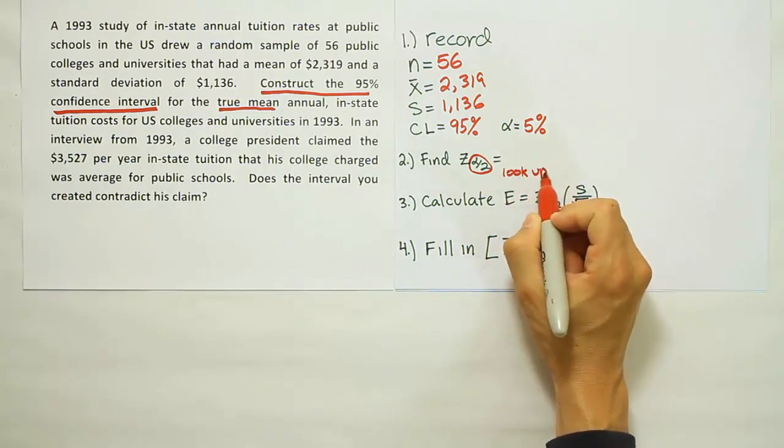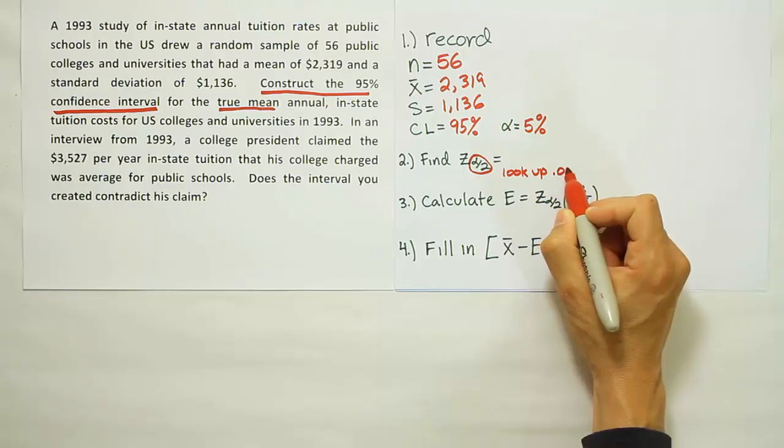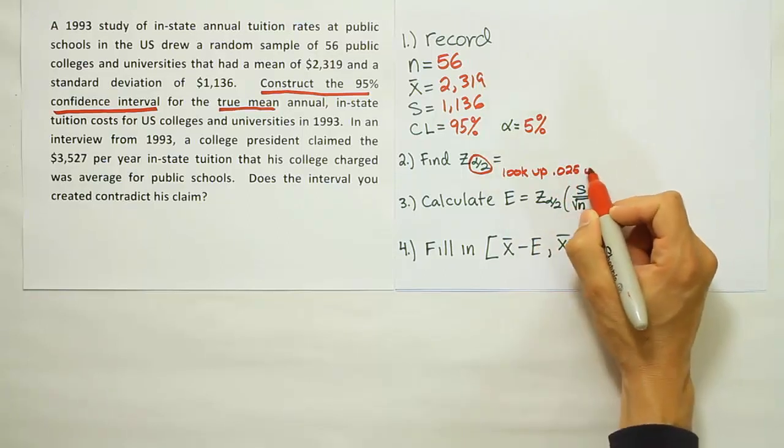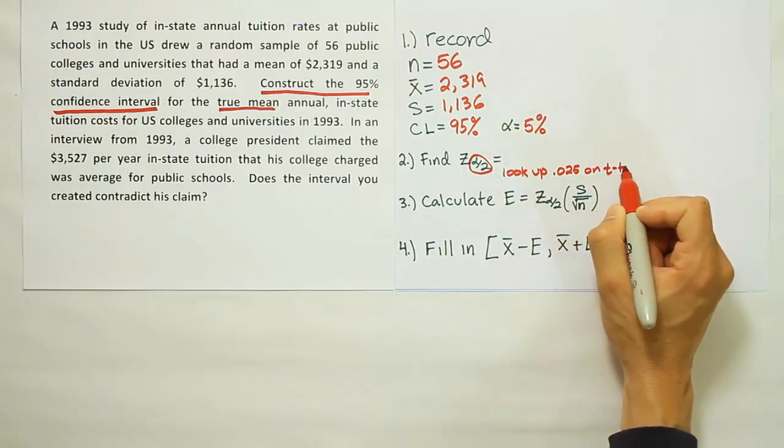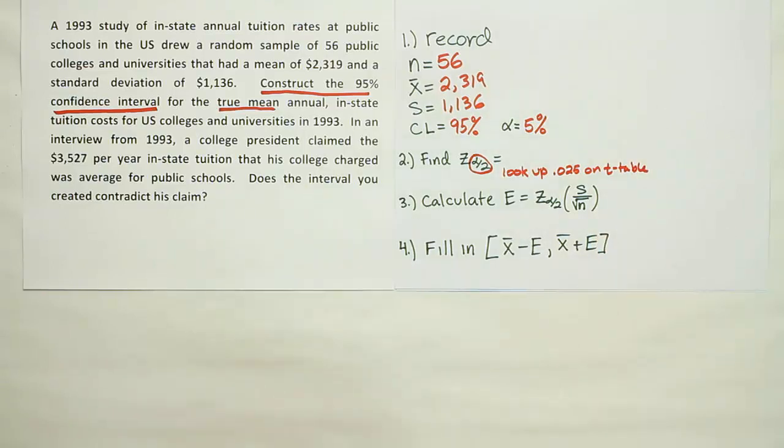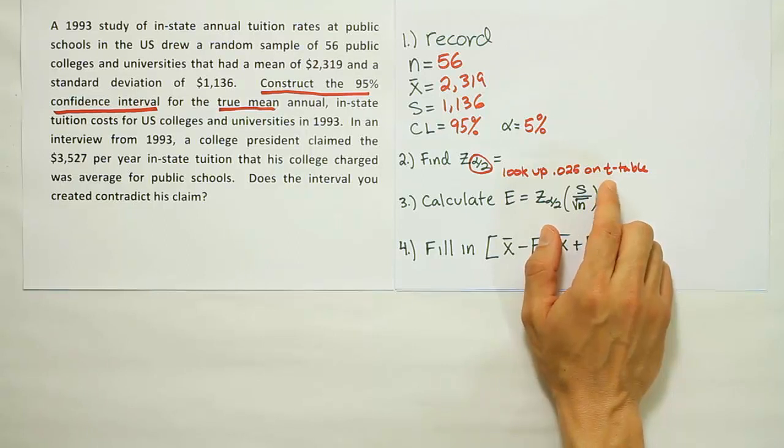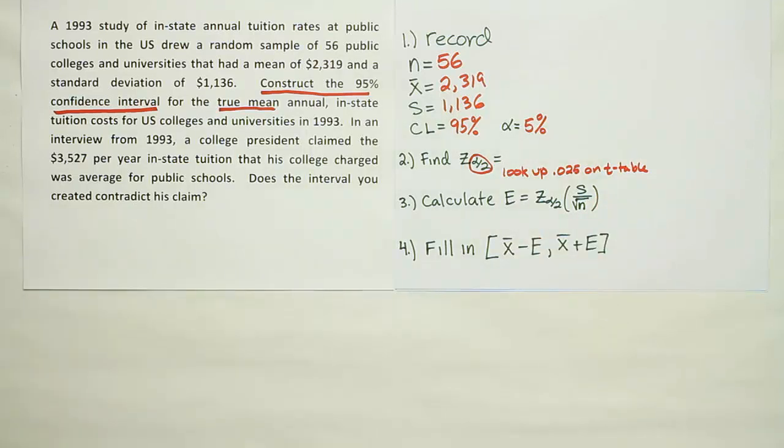That's how we're going to get this number. We're going to go to our table, look up 0.025 on the T table, and that's going to give me the value we're looking for. So let's go to that table now and look that number up.